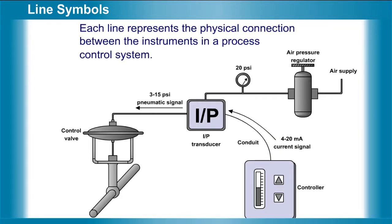Each line represents the physical connection between the instruments in a process control system.